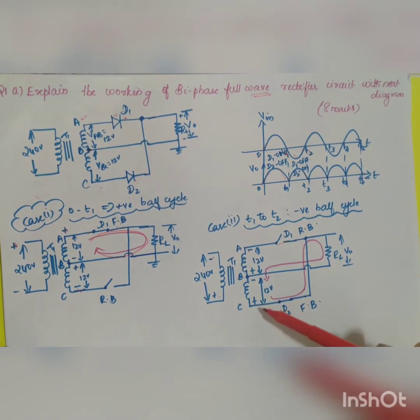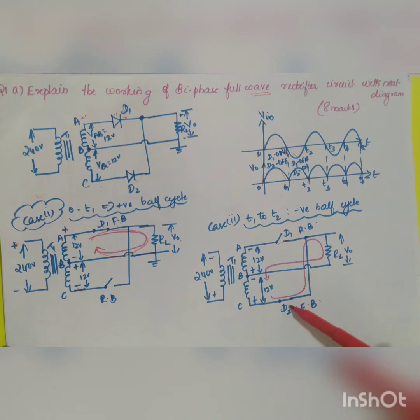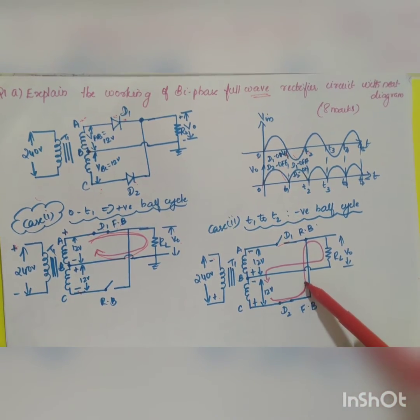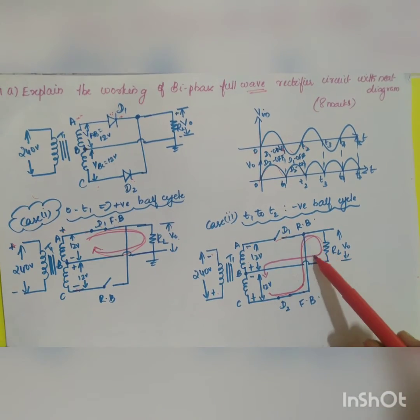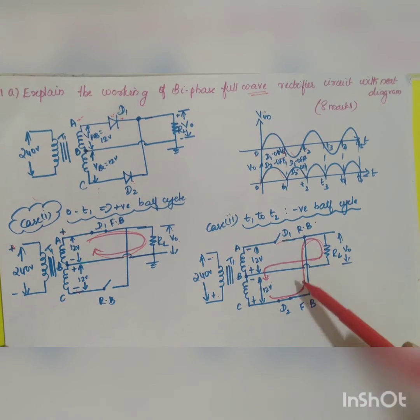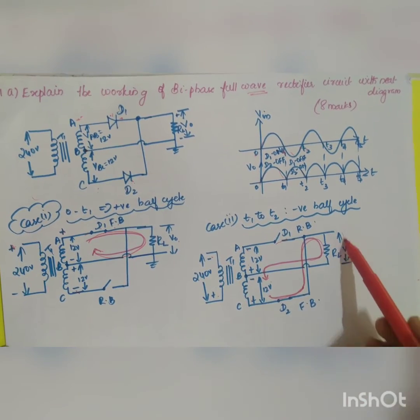Current flows from positive to negative through the load resistor RL and comes back to the negative terminal. This is how in both cases you are getting the output across your load resistor RL.